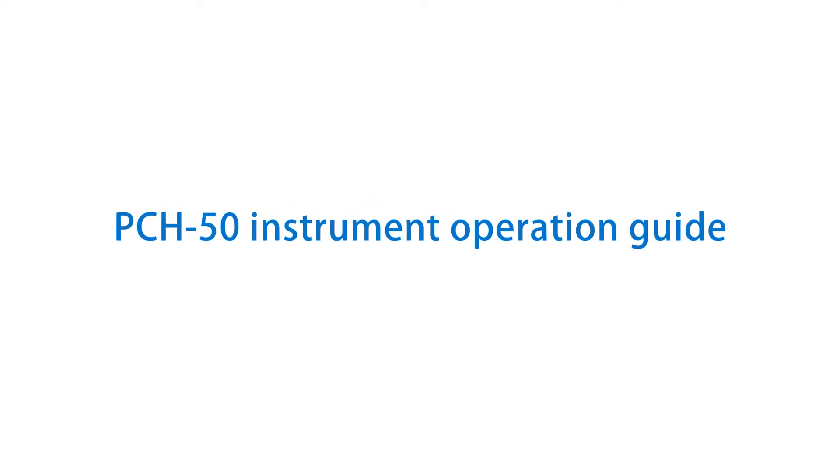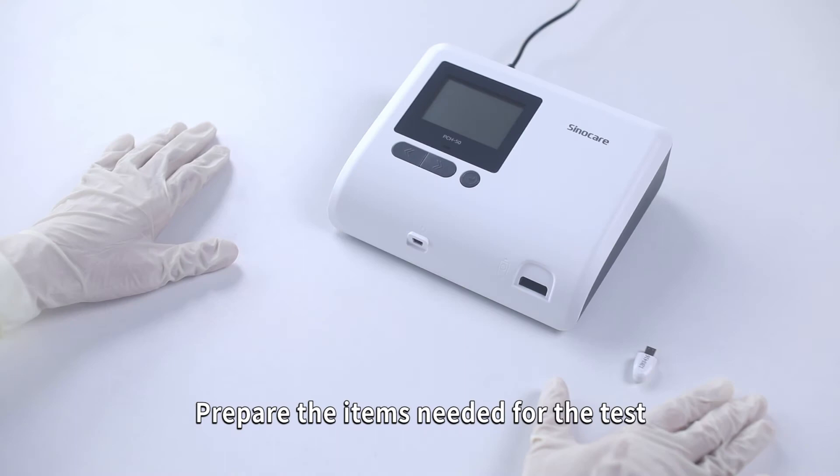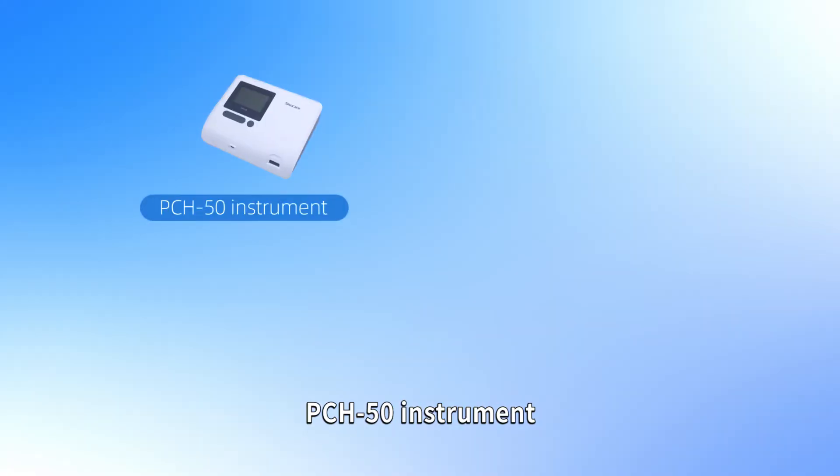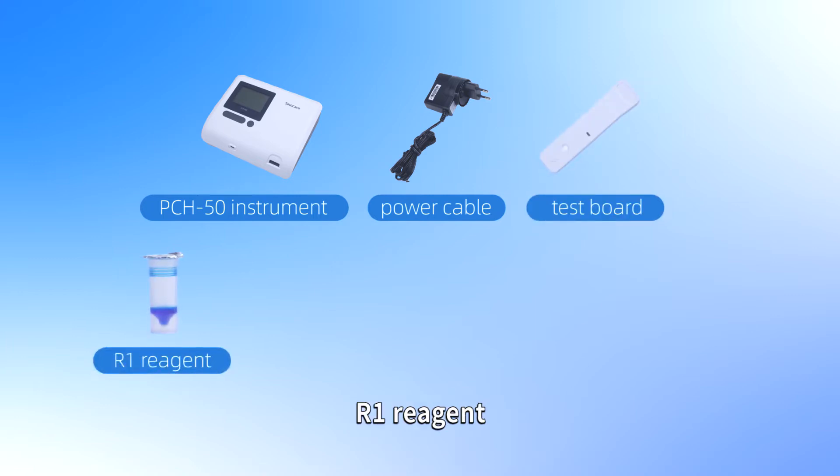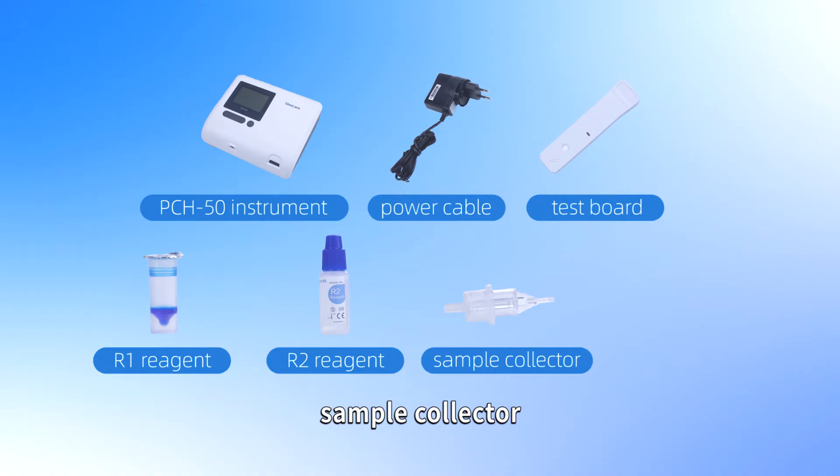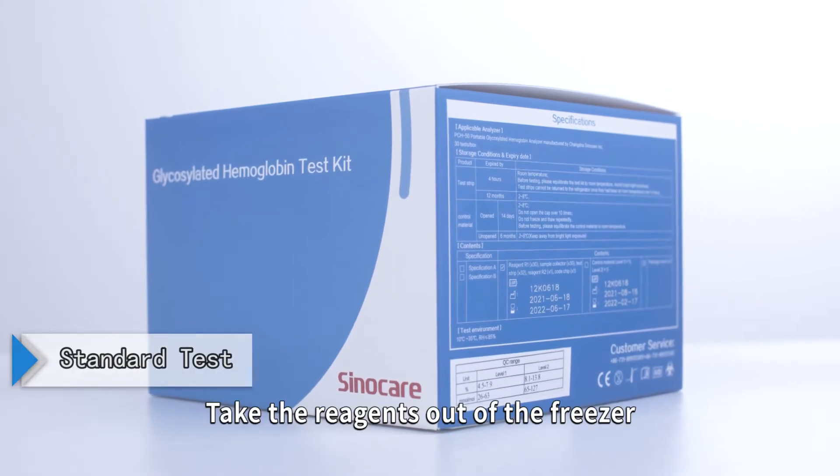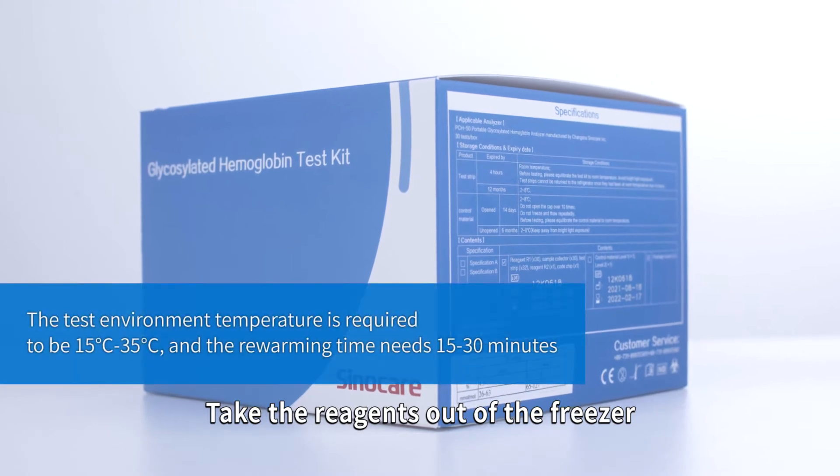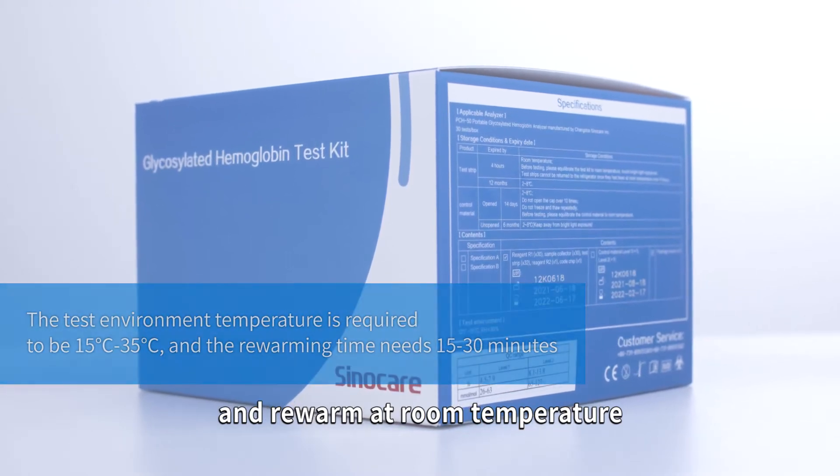PCH-50 Instrument Operation Guide. Prepare the items needed for the test: PCH-50 Instrument, Power Cable, Test Board, R1 Reagent, R2 Reagent, Sample Collector, Code Chip, Standard Test. Take the reagents out of the freezer and re-warm at room temperature.